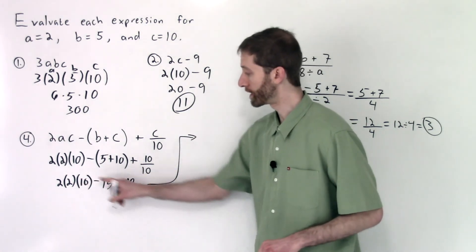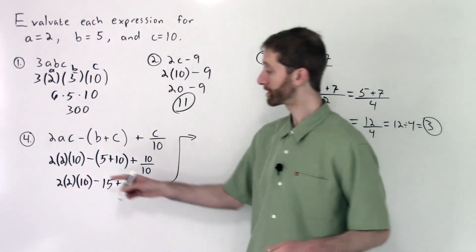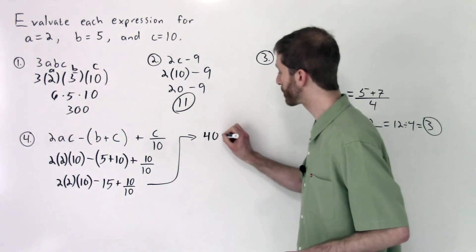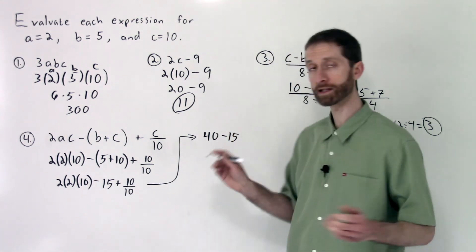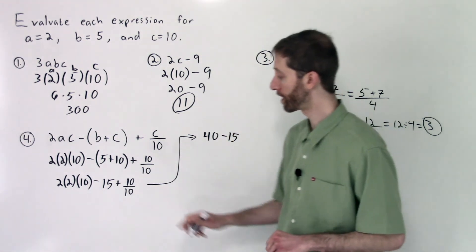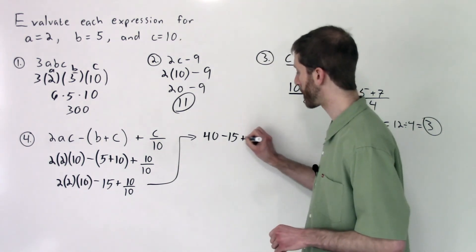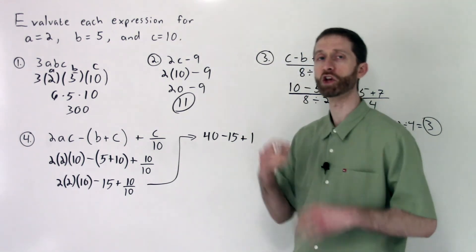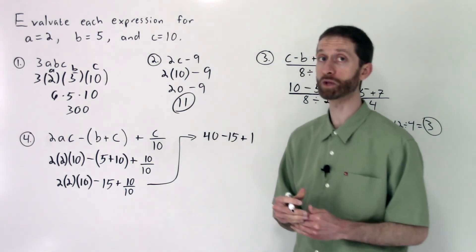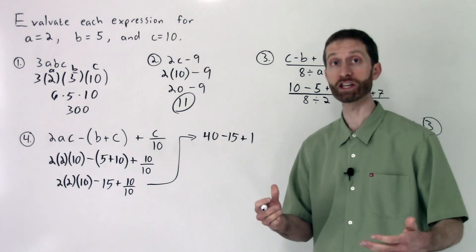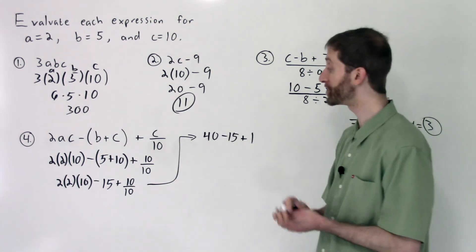2 times 2 is 4 times 10 is 40. I'm going to get 40 from that whole first term minus 15. 10 divided by 10 is 1, division would come next. As you get more comfortable with the order of operations, we can reduce down the number of steps we need to do. That'll actually become better for efficiency or being a little quicker down the road.